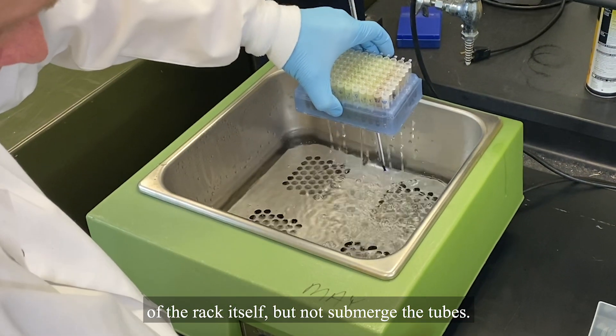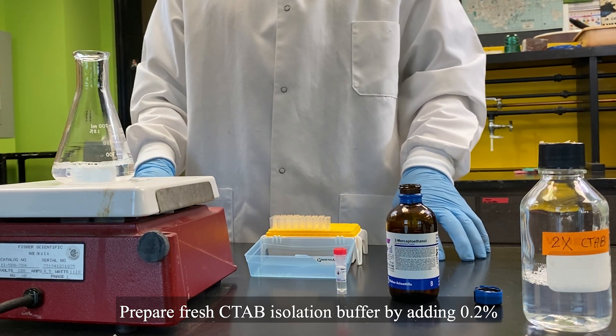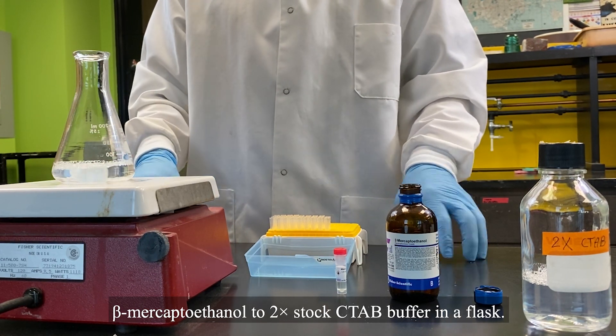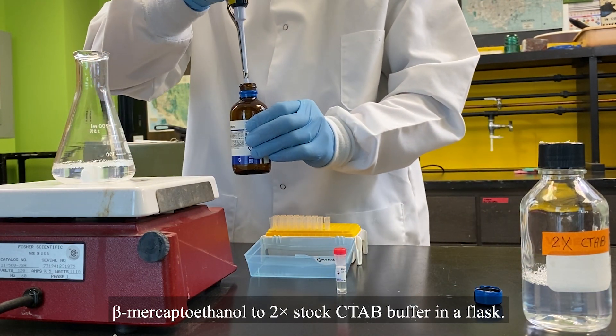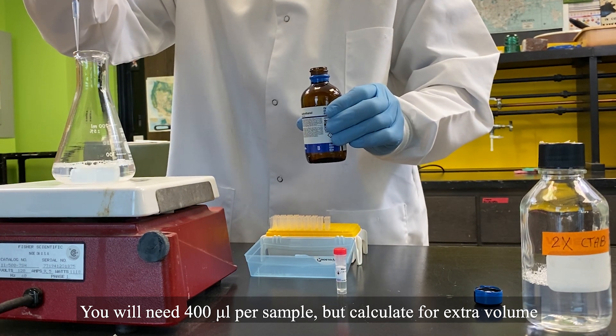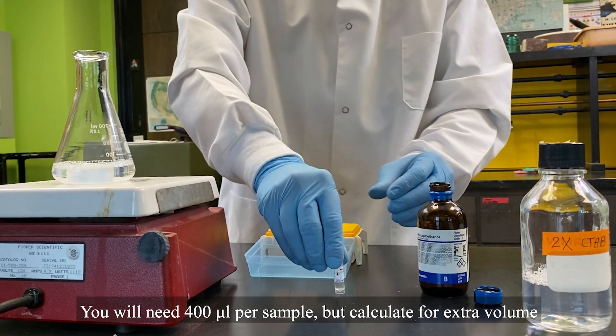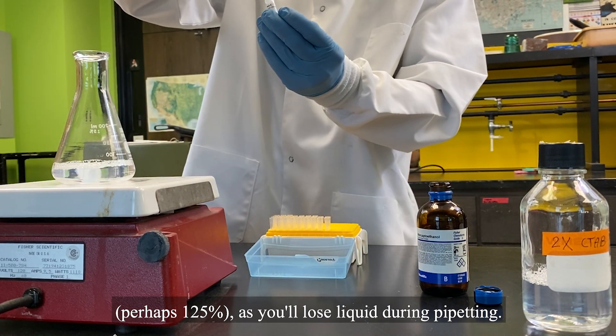Prepare fresh CTAB isolation buffer by adding 0.2% beta-mercaptoethanol to 2X stock CTAB buffer in a flask. You will need 400 microliters per sample, but calculate for extra volume, perhaps 125%, as you'll lose liquid during pipetting.